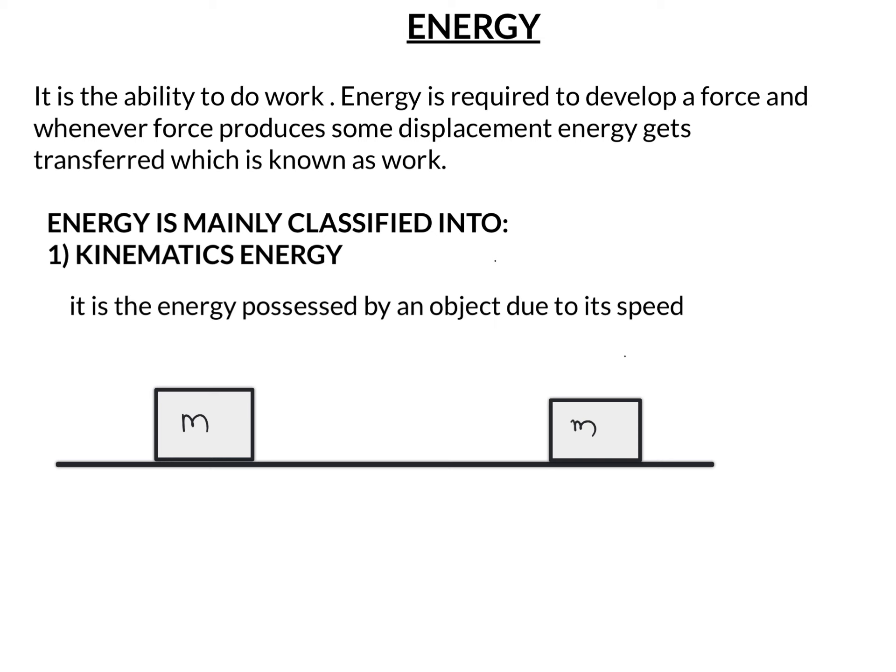Consider a situation where there is an object of mass m kept on a smooth horizontal surface, and assume its initial velocity is equal to 0. We are going to find out the value of kinetic energy using the concept that work done by a force is the reason for its kinetic energy. We consider that initially the object is at rest, and we exert a force F on it.